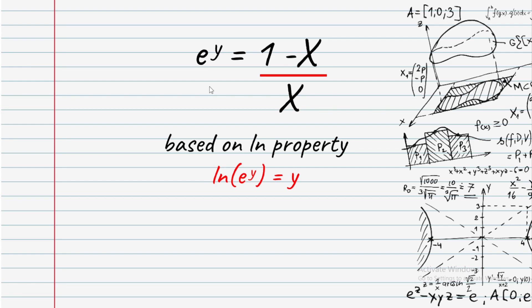Using the log property, since y is the exponent and e to the power of y equals (1 minus x)/x, taking ln of both sides gives y = ln((1 minus x)/x). The log property used here is described in the description.